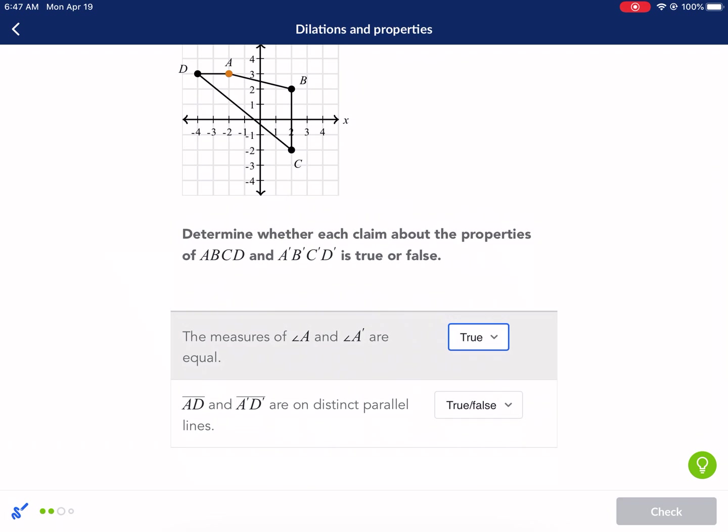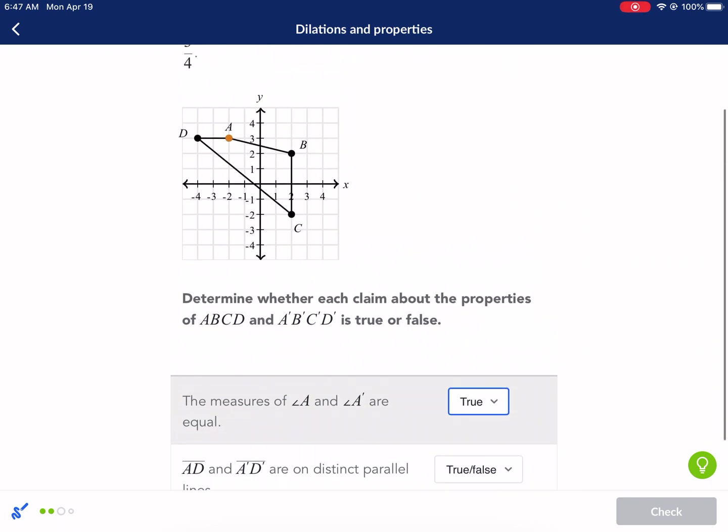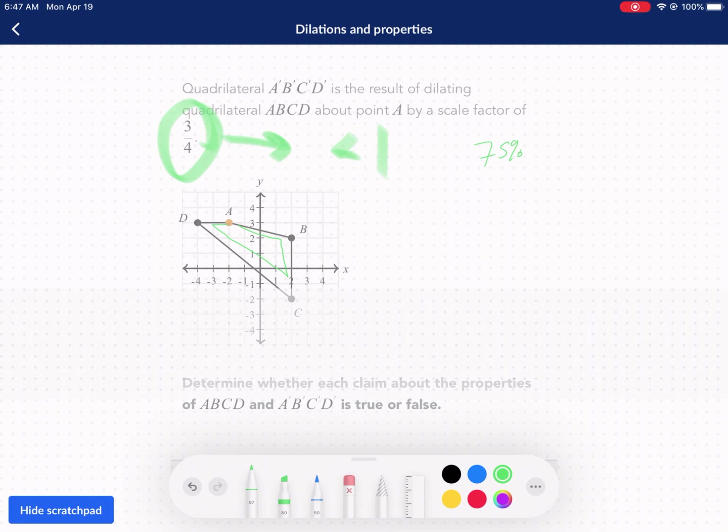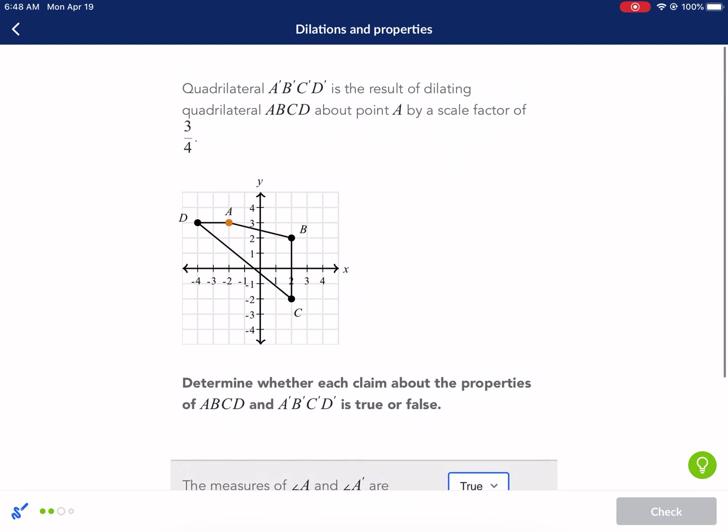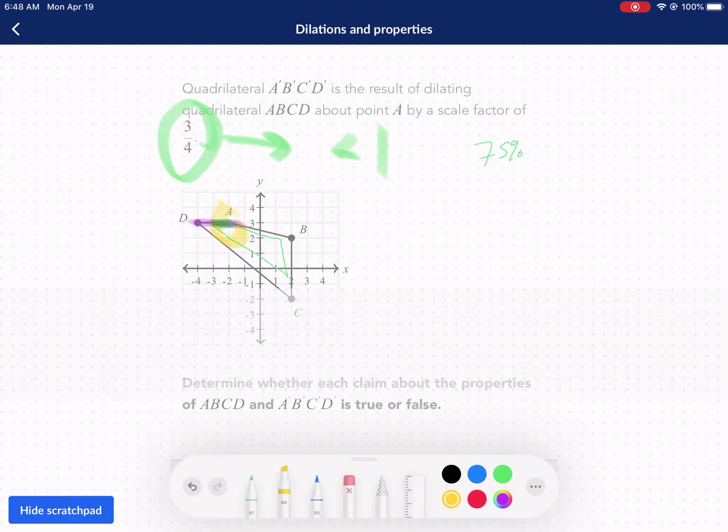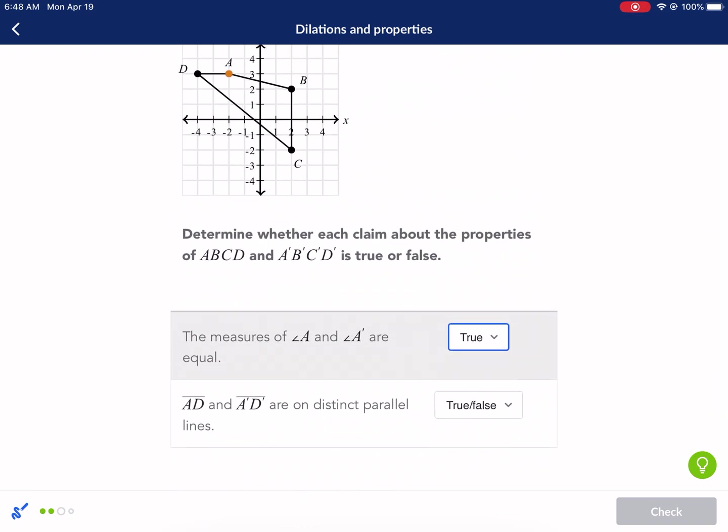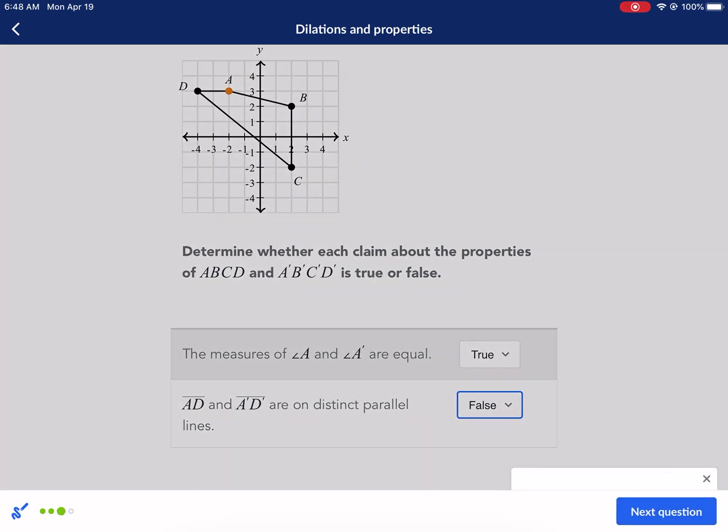AD and AD prime are on distinct parallel lines. This is actually a tougher question than it looks. As it shrinks, I think what it's asking is, as this goes from this pink or purple line to this green line, does it stay on the same parallel line, or is it a different parallel line? The thing is, it's being shrunk around point A. This is the trick here. If it's attached to this point, we're shrinking it around that point. So that means that parallel line is going to stay on the same parallel lines. So I think that is false. It stays on the same parallel line. That's correct.